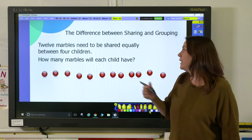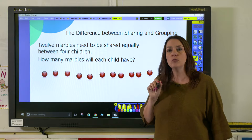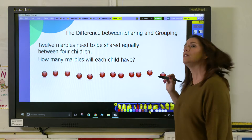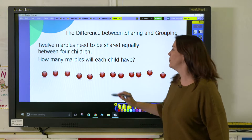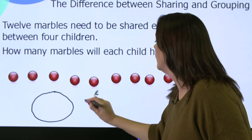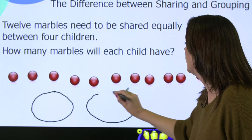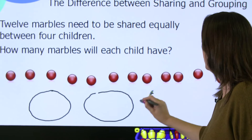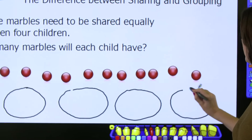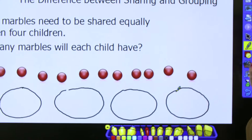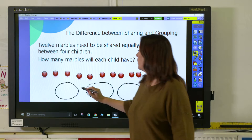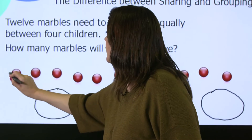Now the key number here is four, so I'm going to draw myself four circles so that I can share the marbles into them, and the circles represent the children. So there's my four circles and then I can share the marbles into them until there are none left.